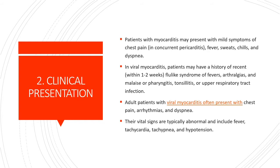Adult patients with viral myocarditis often present with chest pain, arrhythmias, and dyspnea. Their vital signs are typically abnormal and include fever, tachycardia, and hypotension.